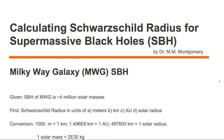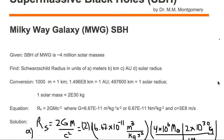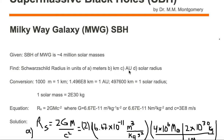We're going to look at calculating the Schwarzschild radius for supermassive black holes, specifically for the Milky Way galaxy. We're given that the supermassive black hole of the Milky Way galaxy is around 4 million solar masses. Our goal is to find the Schwarzschild radius in units of: A) meters, B) kilometers, C) AU, and D) solar radius.